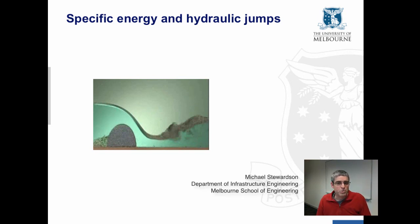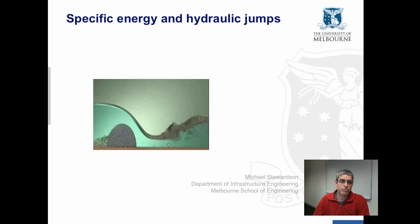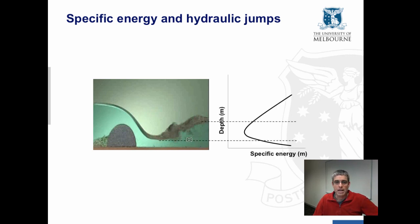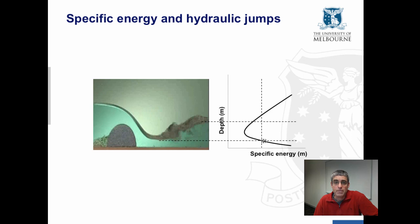We can apply the specific energy curve to a hydraulic jump. Here's the same hydraulic jump that we looked at in the introduction to this module. We're going from critical flow to supercritical flow to subcritical flow — it's a rapidly varied flow transition and we have a lot of turbulence through this transition, so there is energy loss, a reduction in the specific energy. Here are our two depths before and after the hydraulic jump, drawn across onto the specific energy curve. This is the specific energy at supercritical flow, and this is the specific energy before the hydraulic jump. We get an energy loss through the hydraulic jump as we go to subcritical flow.